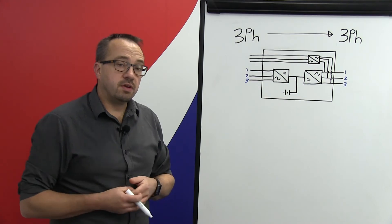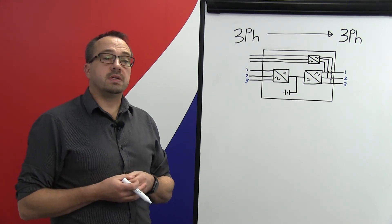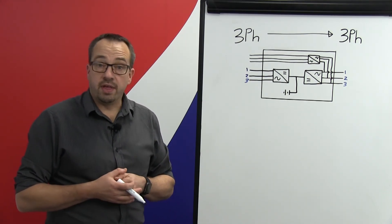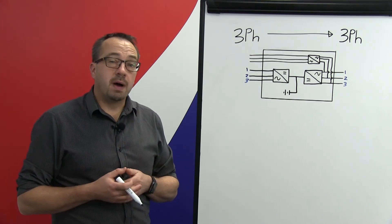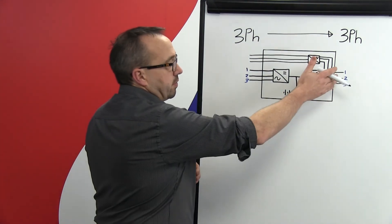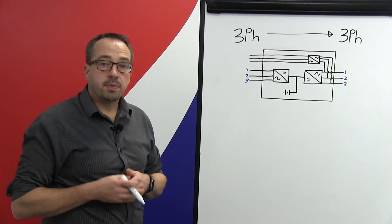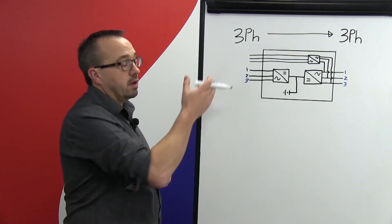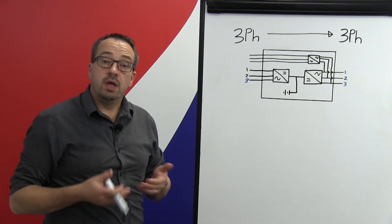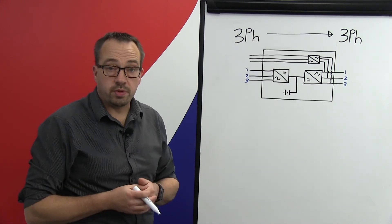Now obviously we must consider most online dual conversion UPS systems do have internal static bypass switches and therefore if the UPS system is in bypass then any imbalance on the outgoing side of the UPS system will be passed through directly onto our input supply and therefore the infrastructure must be designed in order to support this.